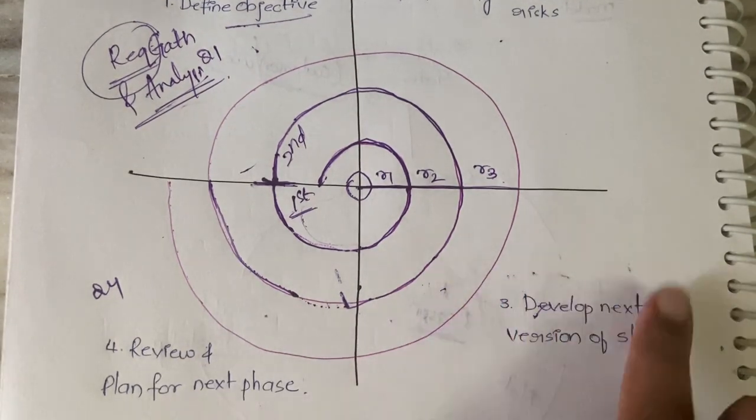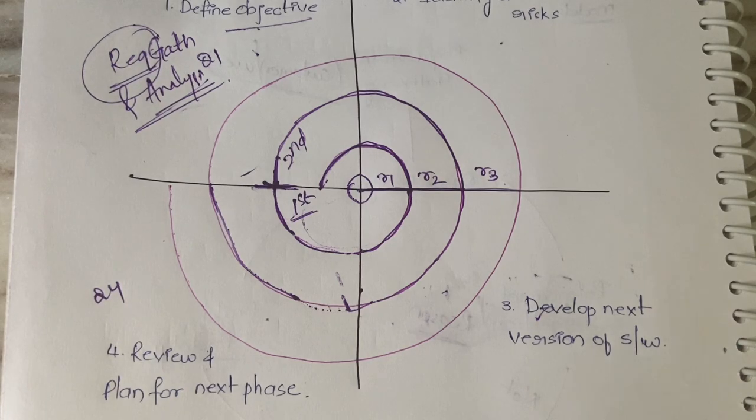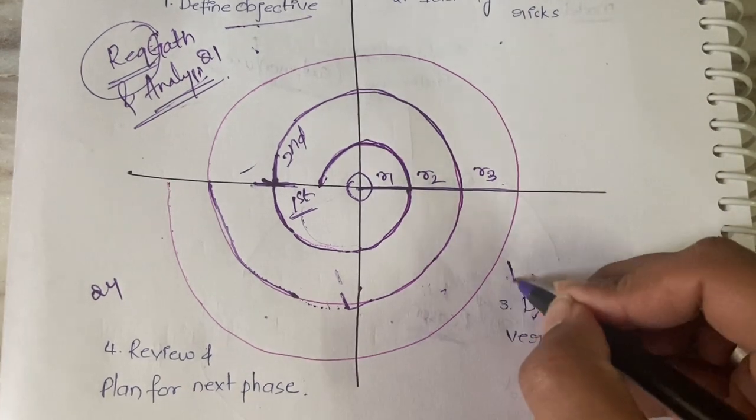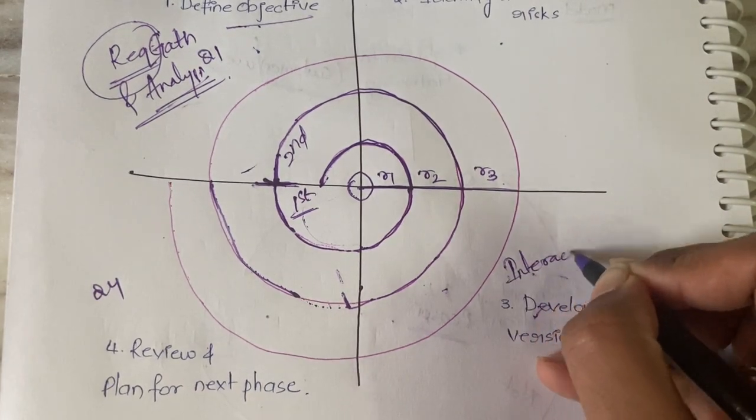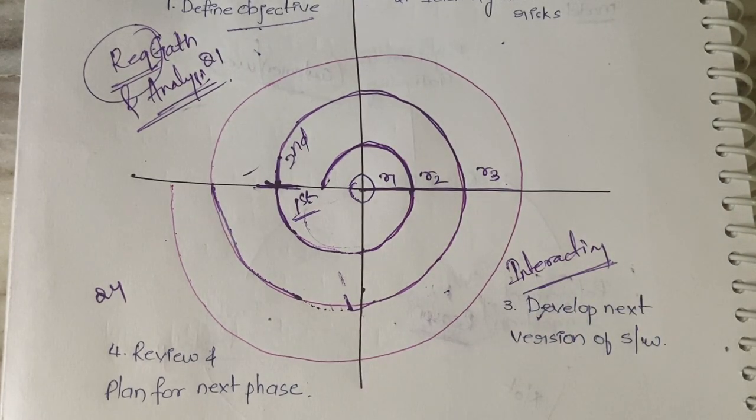Then you will come to the third stage, which is developing the next version of the software. Developing the next version of software means you will be interacting with the customers, taking feedback from them. If there are any changes to be implemented, you will be implementing those changes. That is about developing the next version of the software.